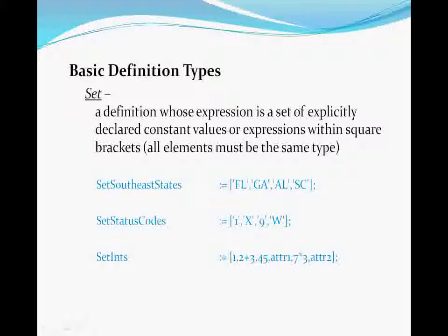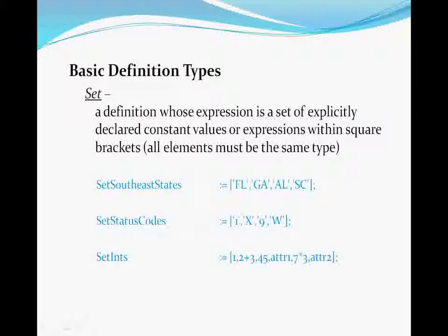The fourth basic definition type is the set, which defines a set of values, much like an array. These values are typically simple data types, but it may also be a set of data sets. Sets are delimited by square brackets. Each element in the set must be the same type of data, which may be constant values or expressions. Our naming convention for set definitions is that the name should begin with 'set' to indicate the definition is a set of values.